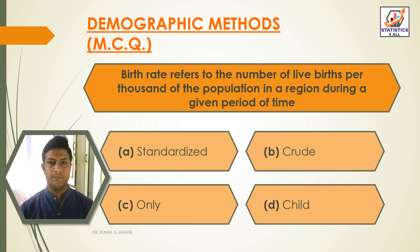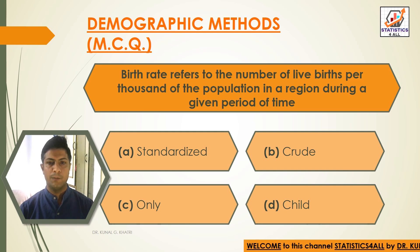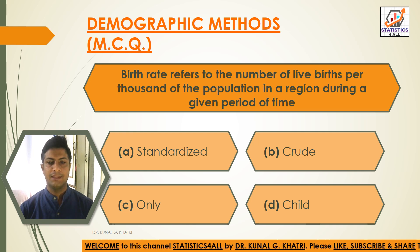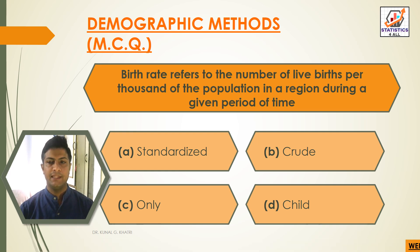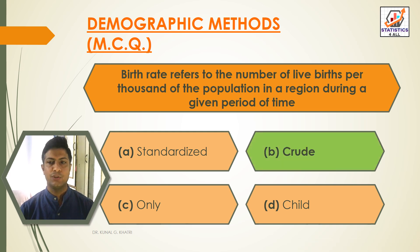Next question: which type of birth rate refers to the number of live births per thousand of the population in a region during a given period of time? Option A: standardized, Option B: crude, Option C: only, Option D: child. The answer is Option B — crude birth rate.